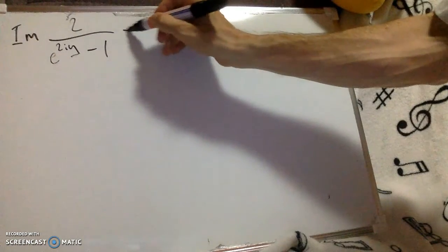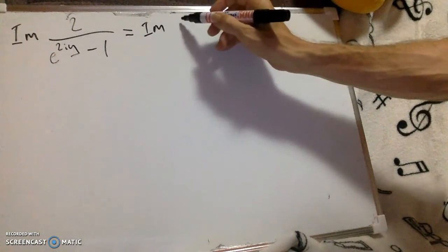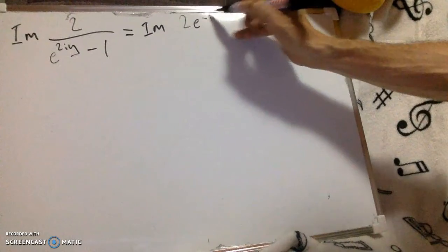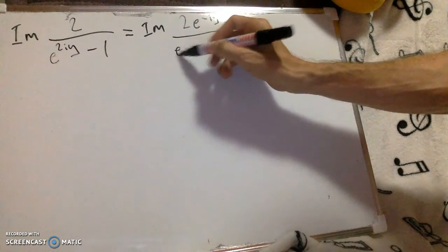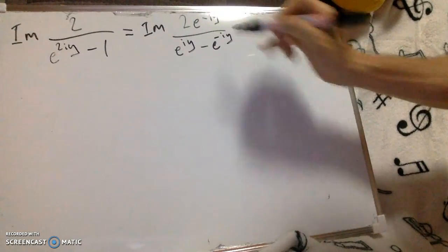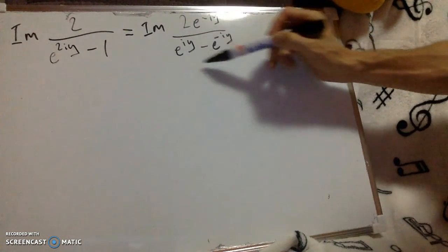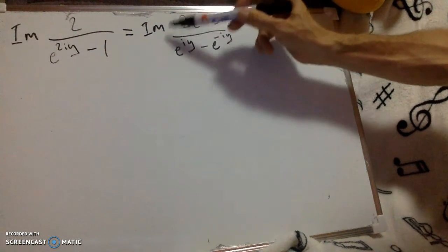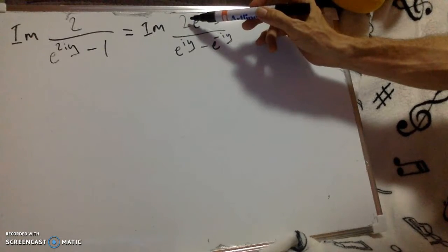So let's do that. So we multiply top and bottom inside the imaginary part by e to the minus i y. And that gives us e to the minus i y. Then we notice that this thing here is actually the same as 1 over sine y.